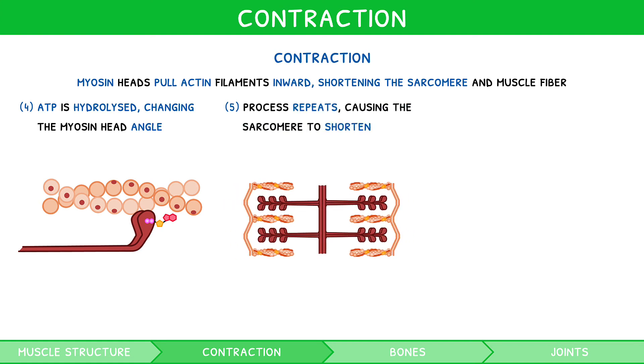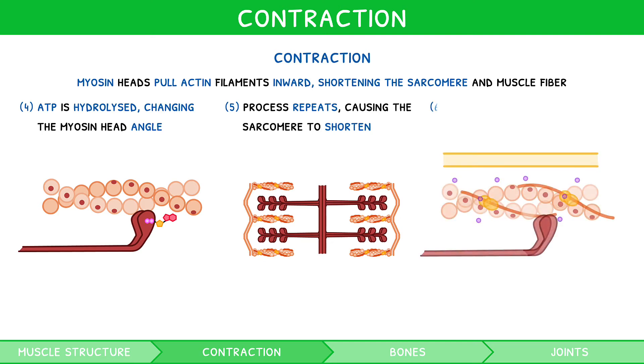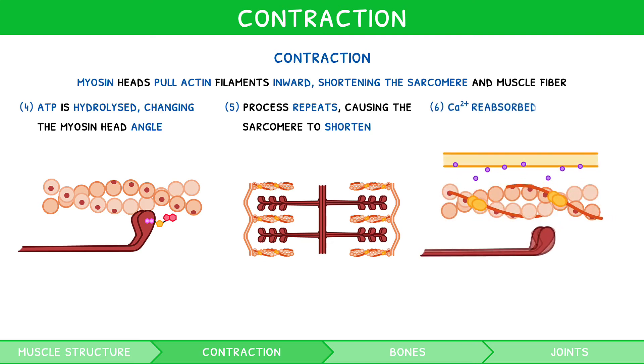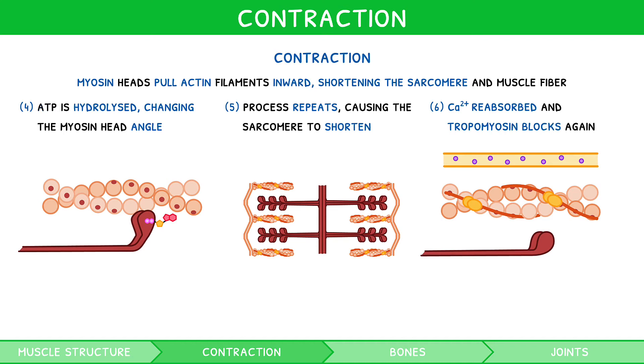When the neuron stops firing, calcium ions are reabsorbed by the sarcoplasmic reticulum, causing tropomyosin to block myosin binding sites, stopping the process.